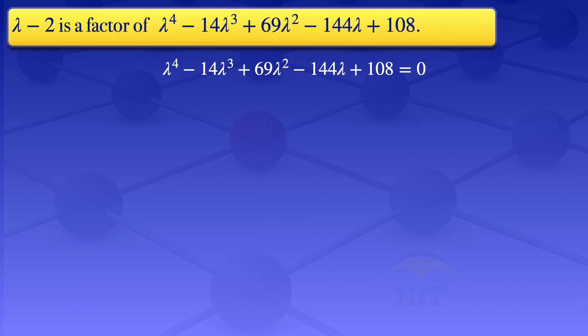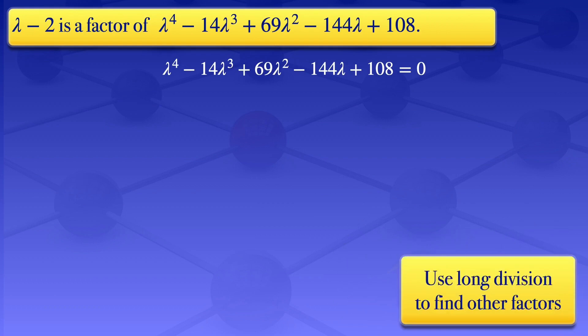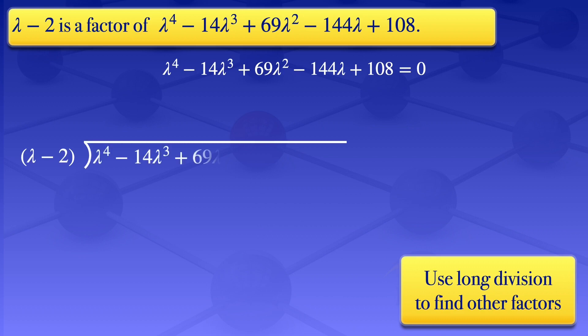To find the other factors, we use polynomial long division. We divide λ⁴ - 14λ³ + 69λ² - 144λ + 108 by (λ - 2). The leading term is λ⁴, which divided by the leading term λ of (λ - 2) gives λ³, which we write on top.